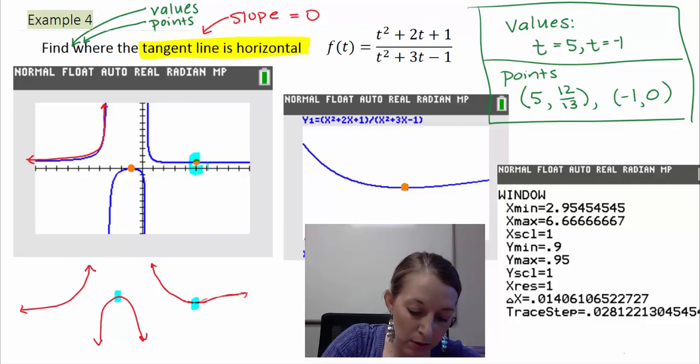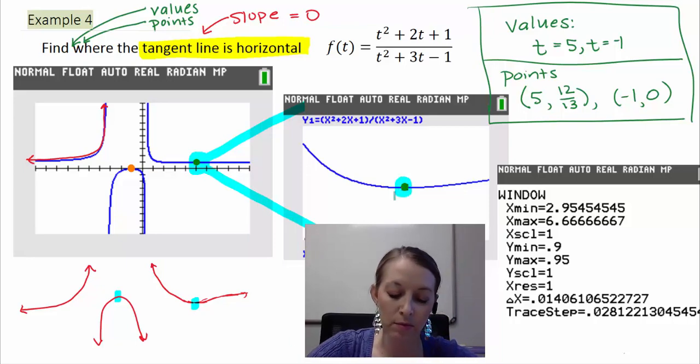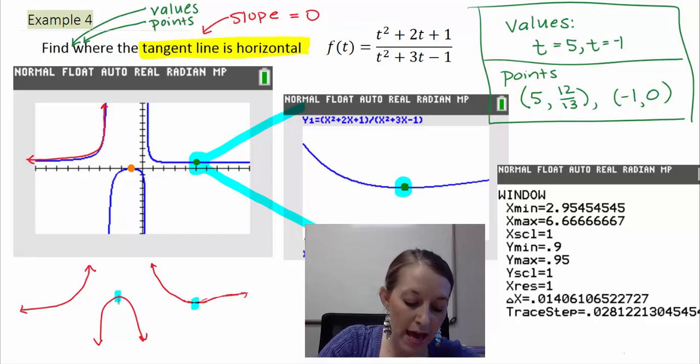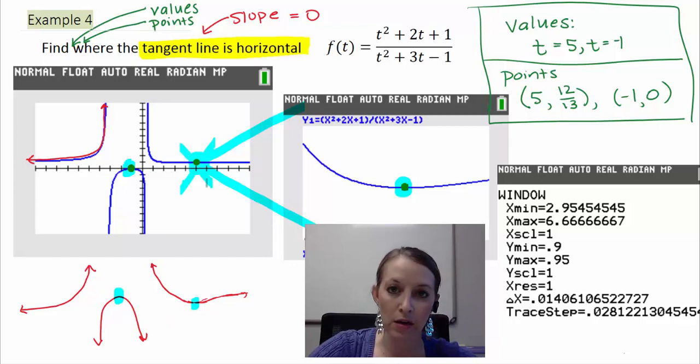That minimum point happens to be right here. And when we zoomed in on it, this is the visual that we got. So this is our 5 value and this is the minimum point that we came up with. So that's why we have horizontal tangent line at negative 1 right here, and at 5, which is right here.